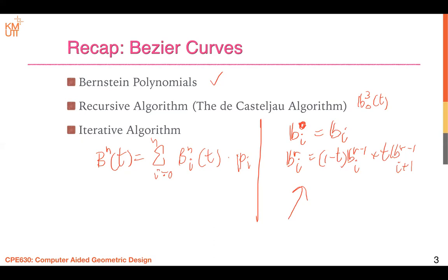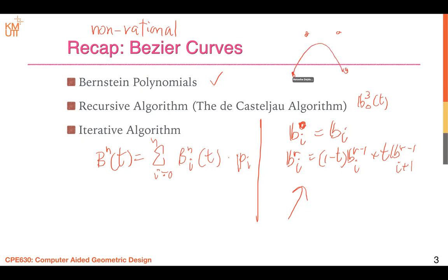This recaps the Bézier curve. For Said-Ball, Wang-Ball, and DP curves, you simply change the polynomials to get the respective curves. These are what we covered before the midterm exam. That kind of Bézier curve I call the non-rational Bézier curve. Non-rational means it is not rational. Today we will talk about the rational curve, because given a set of control points you can get only one unique Bézier curve.